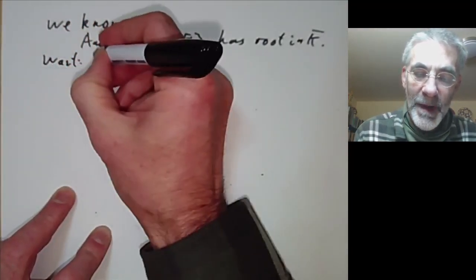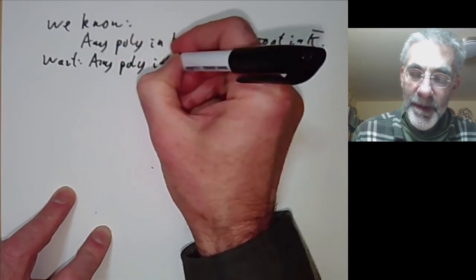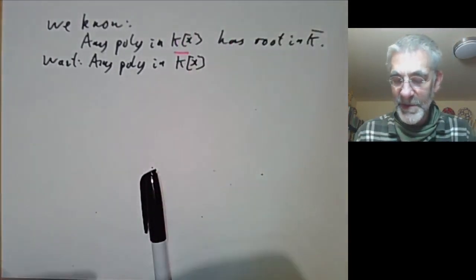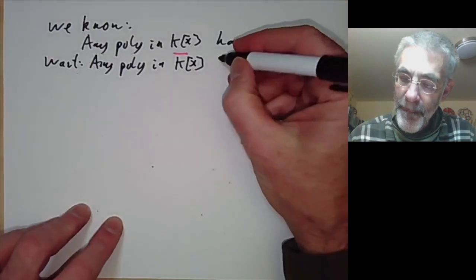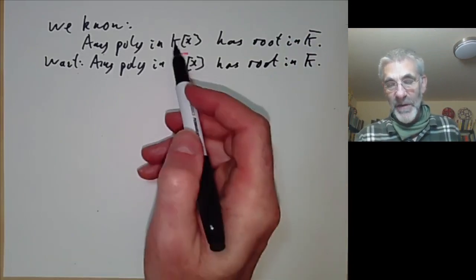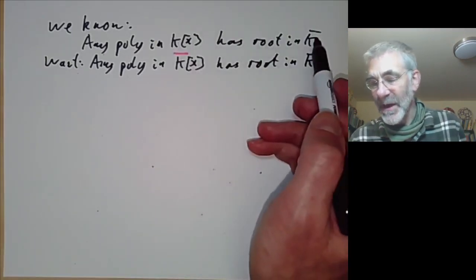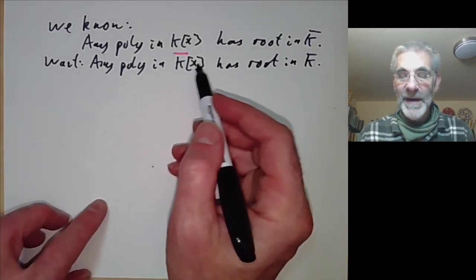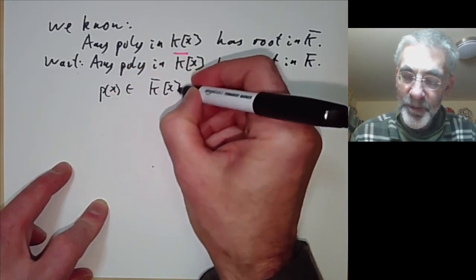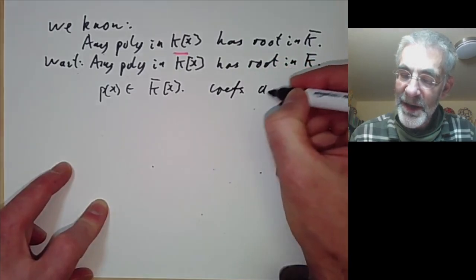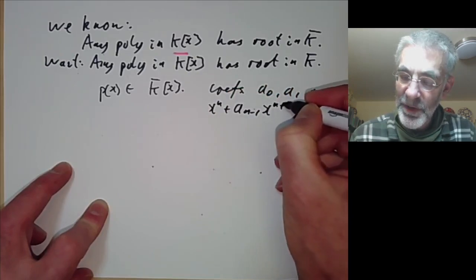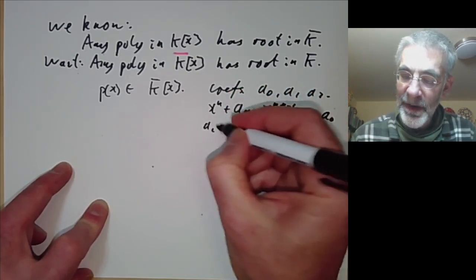We want to show that any polynomial in k̄[x] has a root. Actually this is not too difficult to show: if every polynomial in k[x] has a root in k̄ then we can show that any polynomial in k̄[x] has a root. Suppose p(x) is in k̄[x] — it might be x^n + a_{n-1}x^{n-1} + ... + a_0 where all the a_i are in k̄.